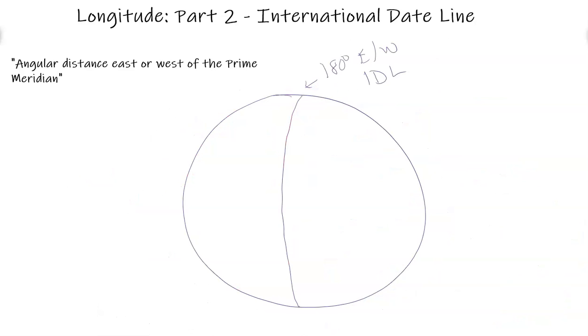So the IDL is 180 degrees east or west, is the opposite to the prime meridian. And this meridian right here is the 180 line. Now, you would think that the date line would run exactly along the 180 degree meridian. It doesn't. Why? Why is it zigzag? Why is it not going to be exactly along the 180 meridian?